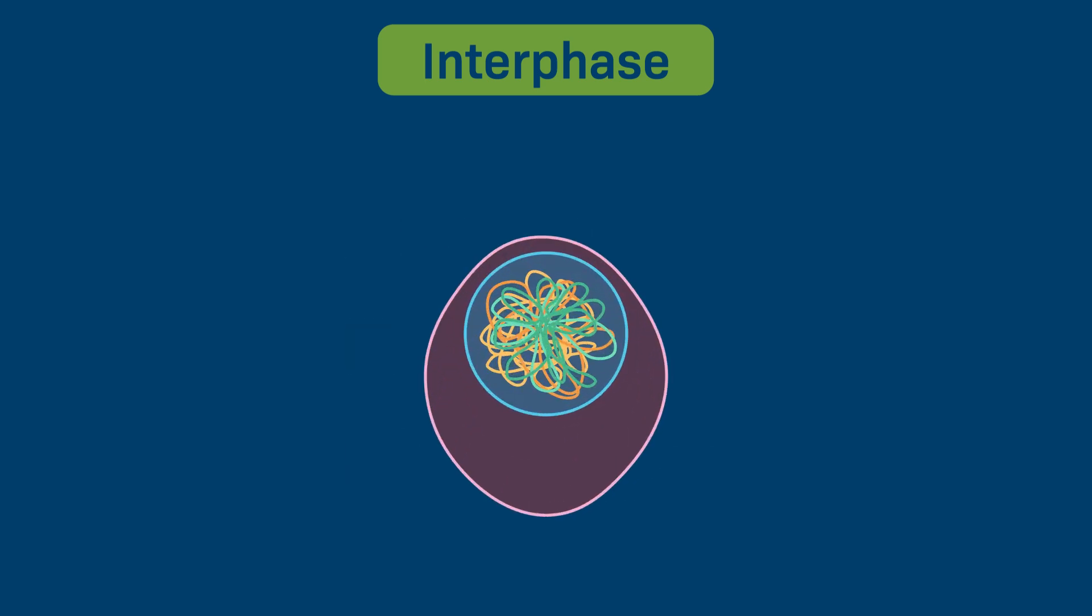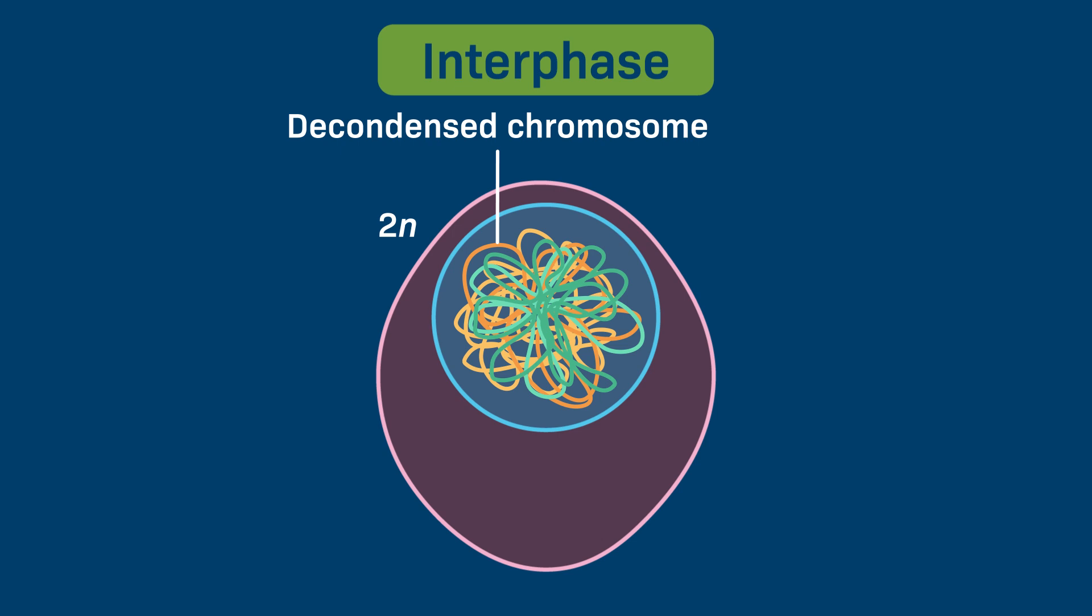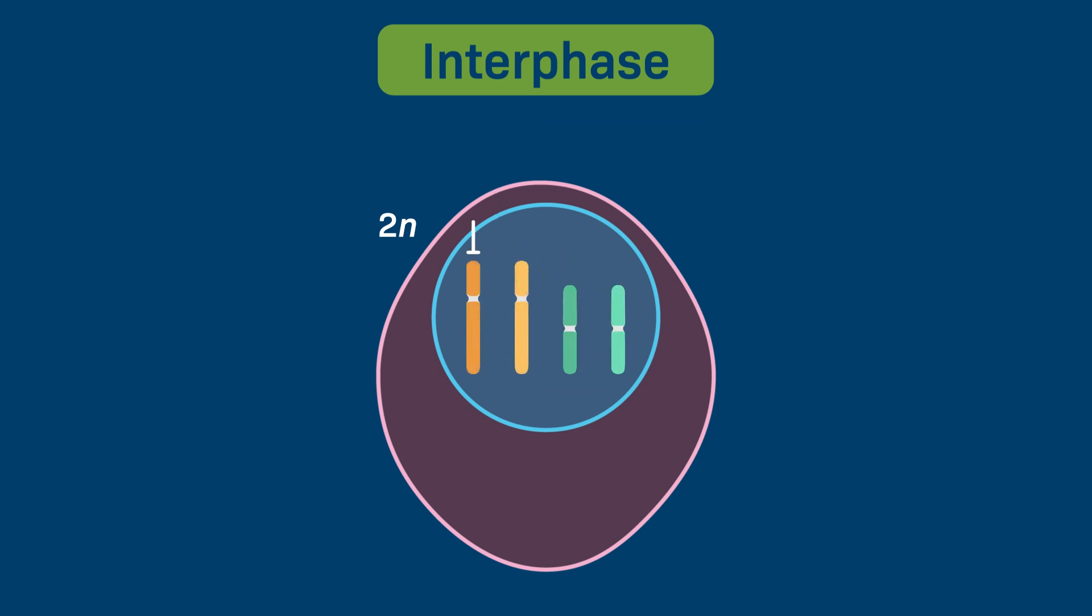During interphase, the chromosomes are usually decondensed or unwound. Here, however, the chromosomes are shown as being condensed or tightly wound.